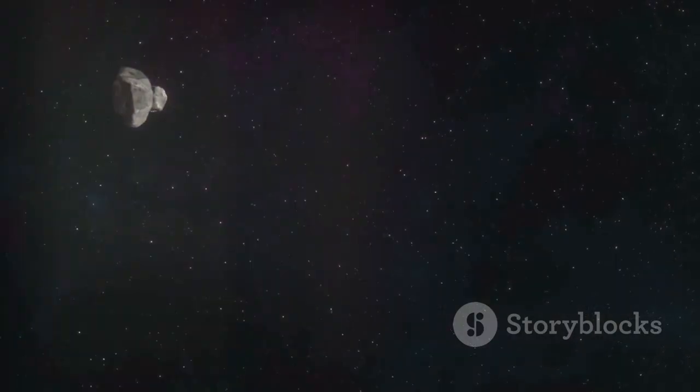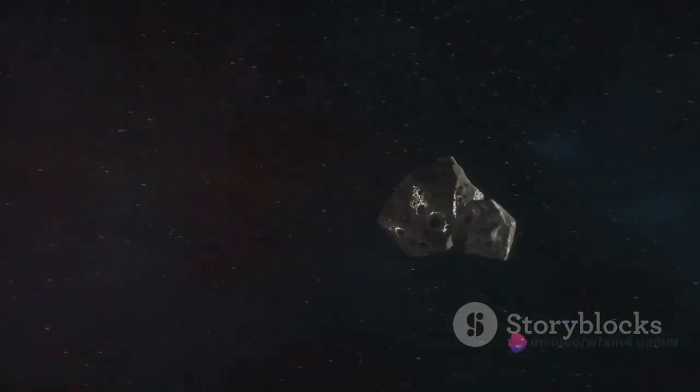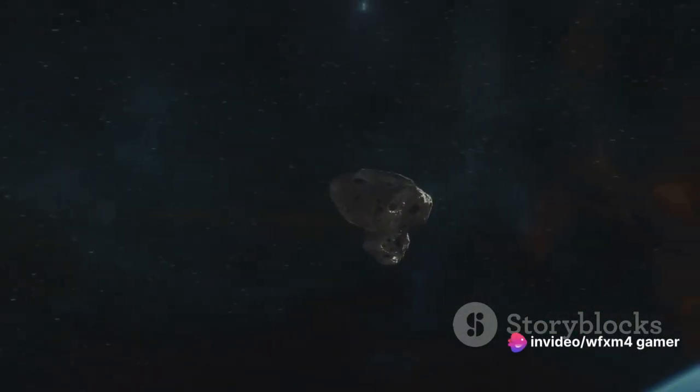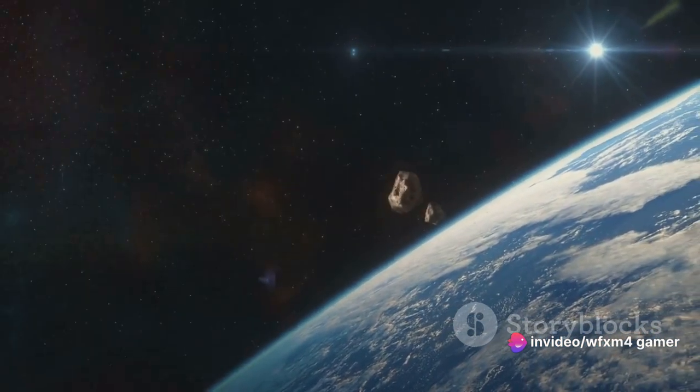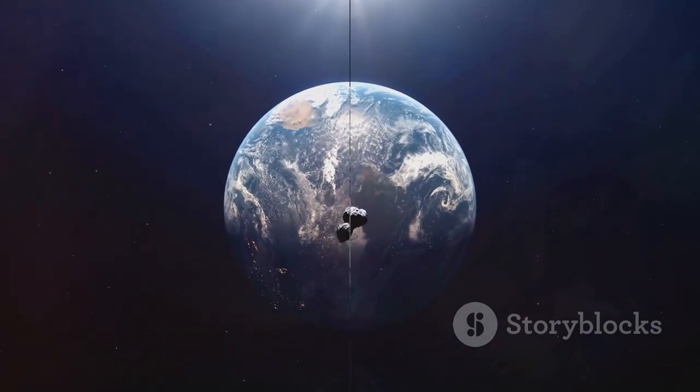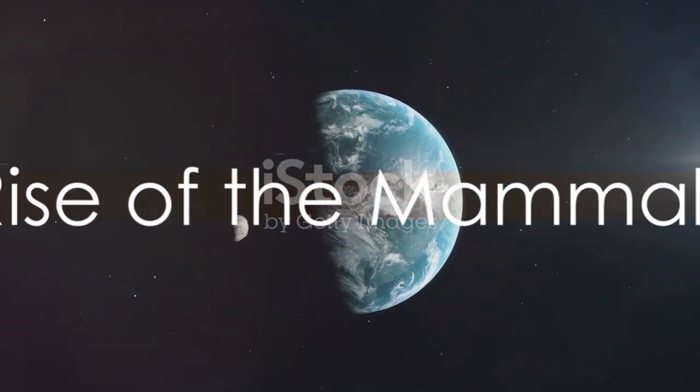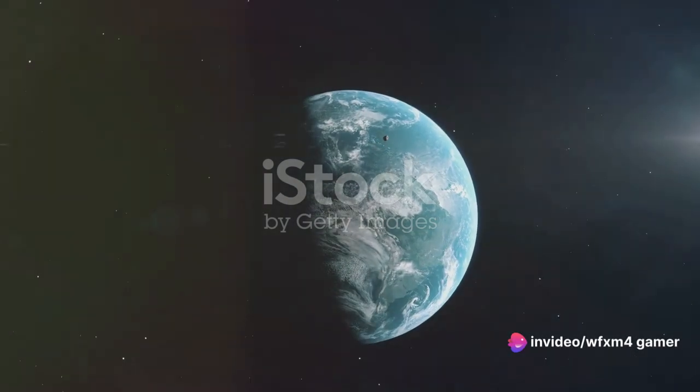Over time, the dust settled, sunlight started to filter through the dense clouds, and the temperatures began to rise. The Earth was now a drastically different place, barren and inhospitable. But from this desolation, life began to evolve once again. In the wake of the dinosaur extinction, a new group of species began to dominate the Earth, the mammals.